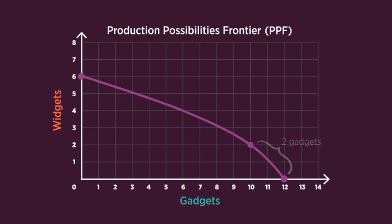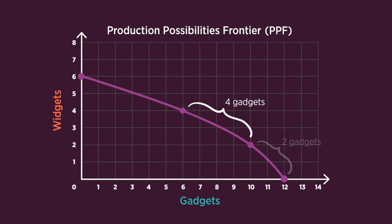Here's widget production increased by another 2. At this point, if Econ Aisle produces 6 gadgets, it can produce only 4 widgets, so it loses the opportunity to produce 4 gadgets. In other words, the opportunity cost of producing 2 widgets is now 4 gadgets.